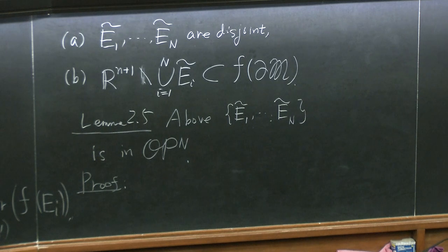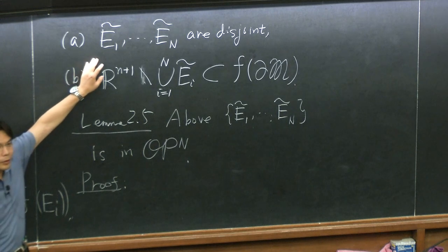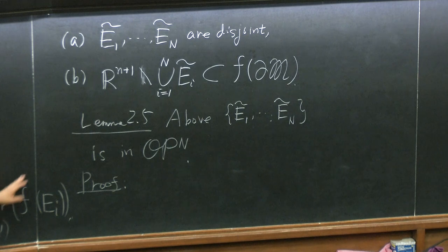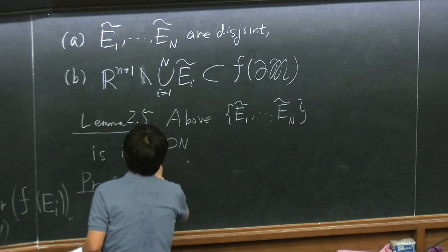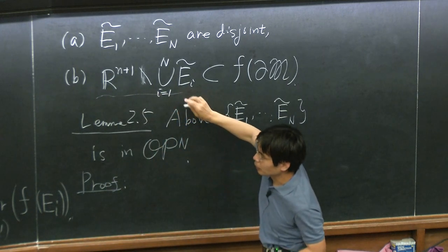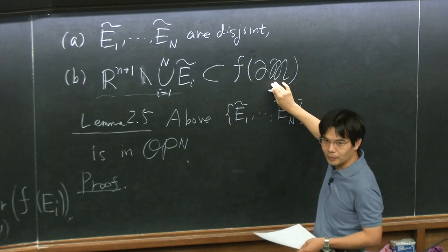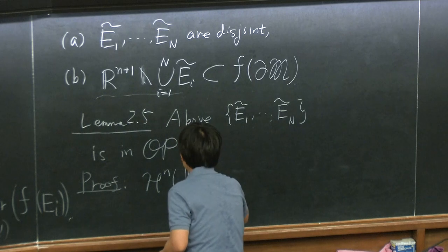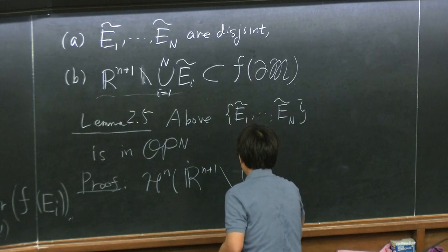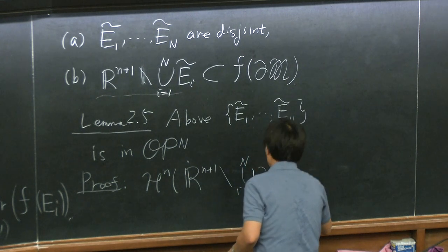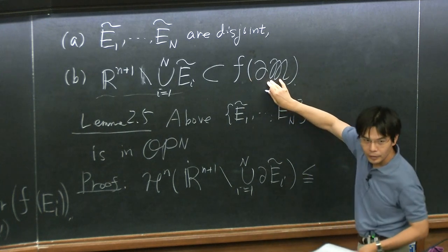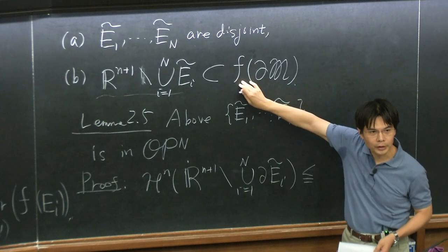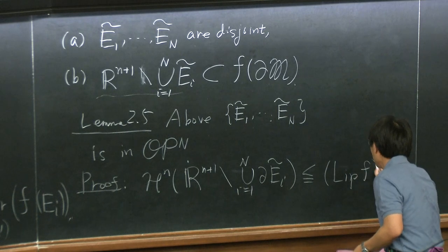What is an open partition of N elements? I just need to check these three things. The first one — open and disjoint — is true by definition, because I'm requiring them to be disjoint and their interior points are obviously open. The second one, finite measure: the boundary is in the image of the original boundary, and this is a Lipschitz map. Under the Lipschitz map, the Hausdorff measure may increase by at most Lip(F)^n.